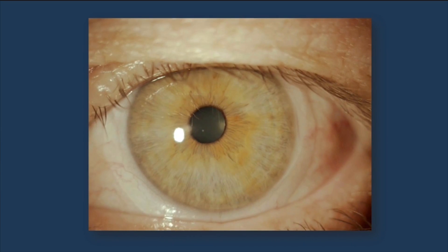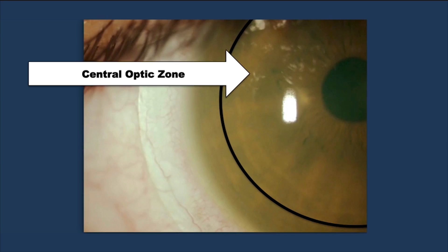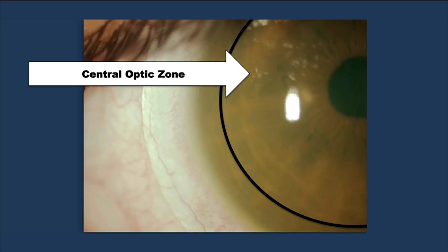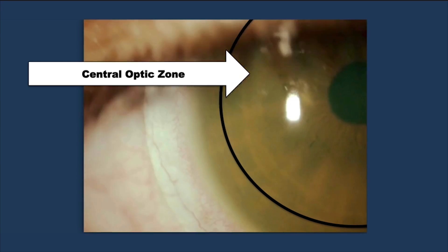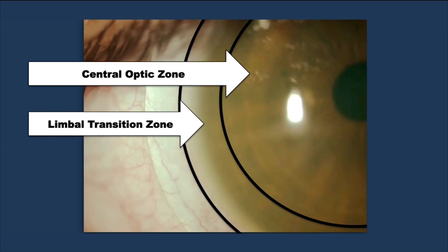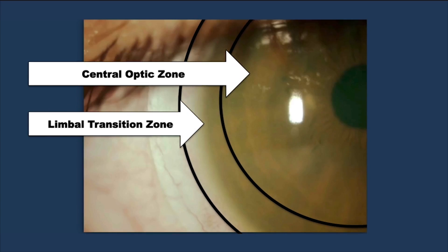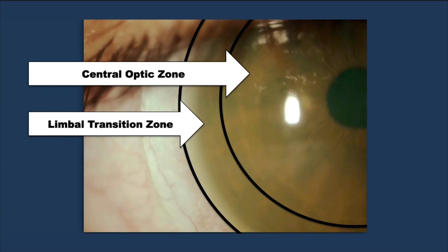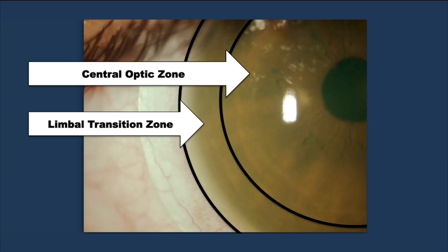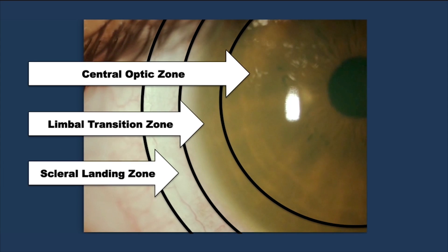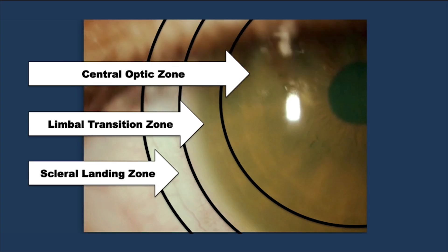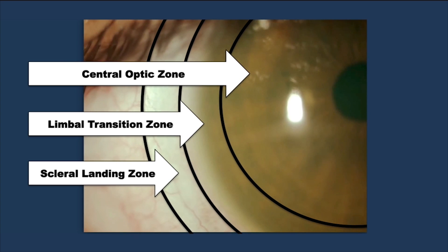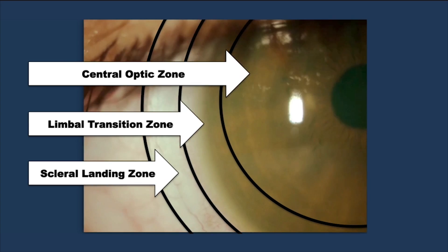The central zone is that portion of the lens that is over the central portion of the cornea and provides the optics of the lens to the eye. The limbal transition zone is the part of the lens just distal to the central portion, and when on the eye is over the limbal corneal region. The scleral landing zone is the outer ring of the lens and the part that rests on the conjunctiva and underlying sclera.